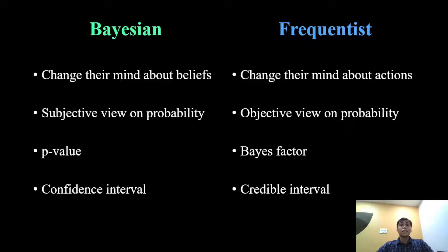In a nutshell, Bayesian statisticians change their mind about beliefs, while frequentist statisticians change their mind about action. Bayesians have a subjective view on probability whereas frequentists have an objective view on probability. Hypothesis testing yields a p-value in classical statistics, whereas we get a Bayes factor — a measure of the strength of evidence — after performing a Bayesian analysis. Also, in classical analysis we get confidence intervals, whereas the Bayesian counterpart is credible intervals.